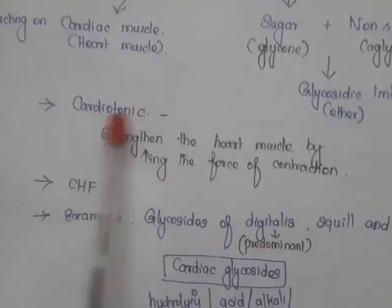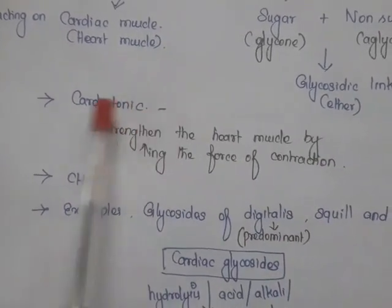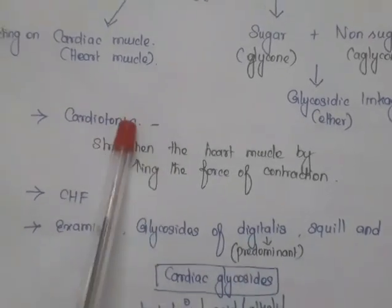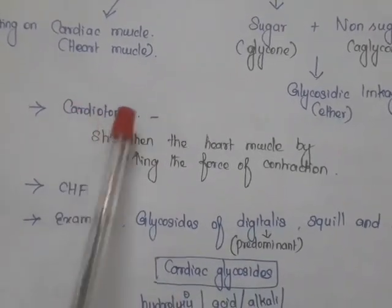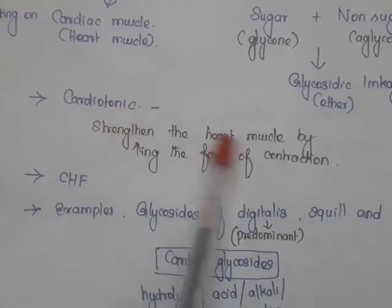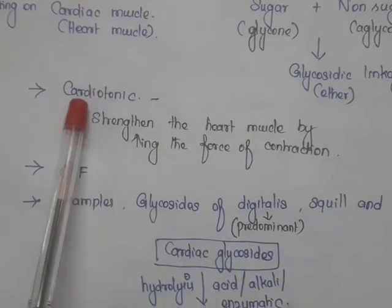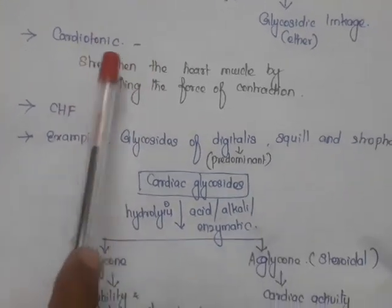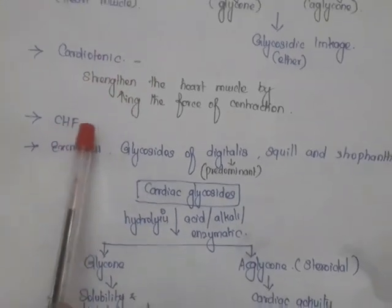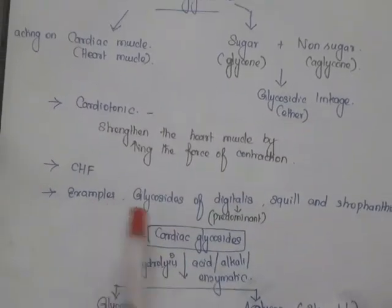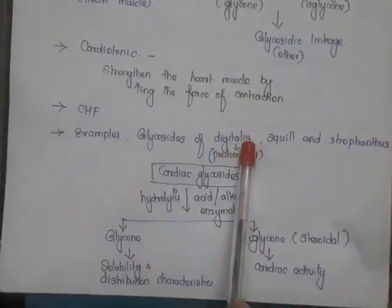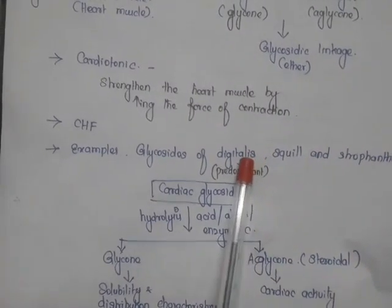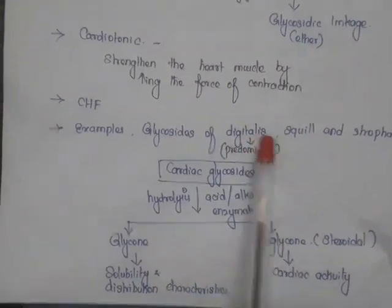Cardiac glycosides act as cardiotonic. Tonic means giving strength, so they strengthen the heart muscle by increasing the force of contraction — that is called cardiotonic. They are used in the treatment of congestive heart failure. Examples include glycosides of digitalis, squill, and strophanthus. Among these three, the digitalis glycosides are the most predominant.